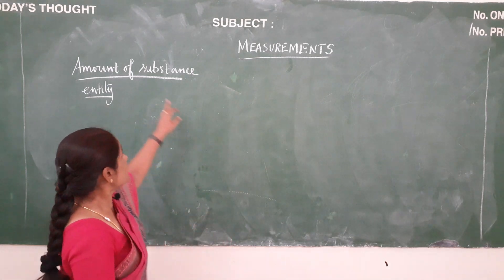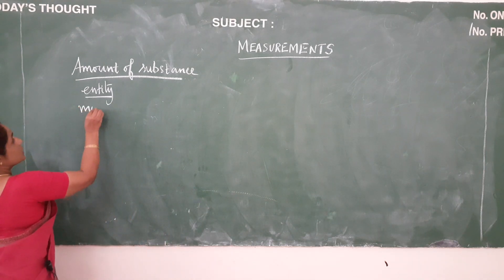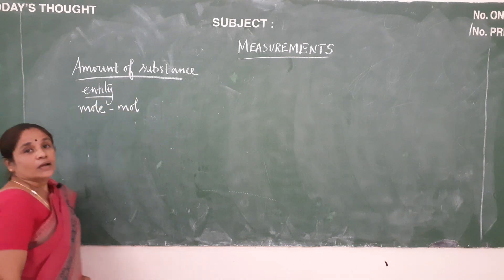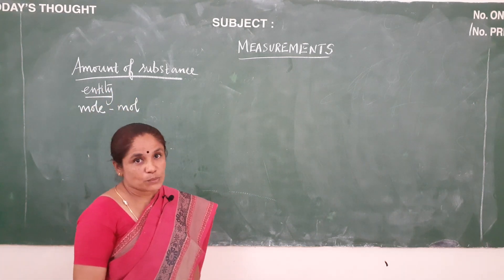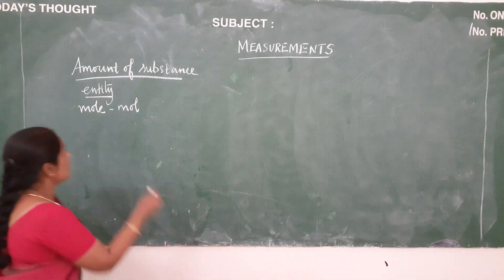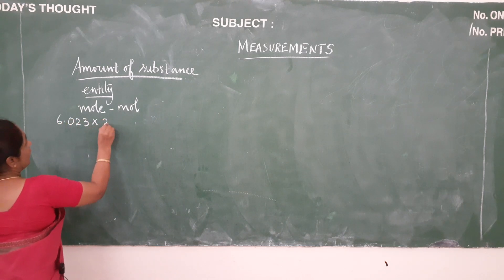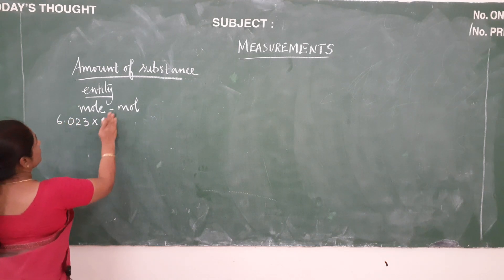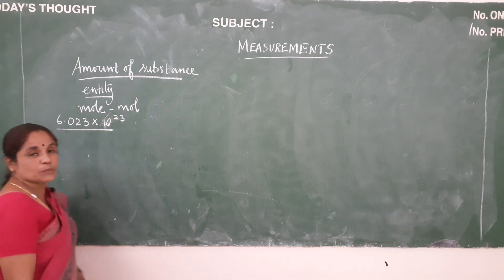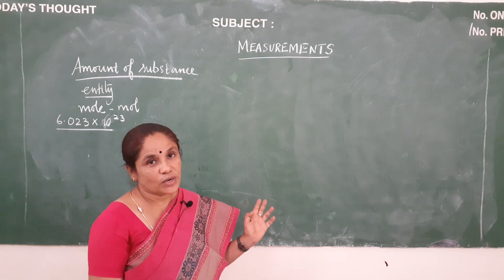Now let us see the SI unit of amount of substance. The SI unit for amount of substance is mole and it is denoted by mol. Mole is the amount of substance which contains 6.023 into 10 to the power of 23 entities. This value 6.023 into 10 to the power of 23 is called the Avogadro number.